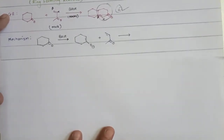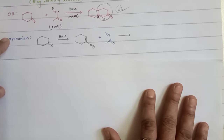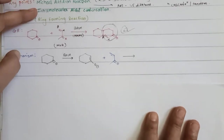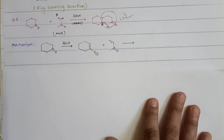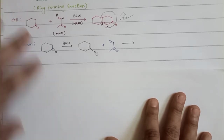Now let's walk through the complete mechanism. We will study the mechanism in three parts. The first part is formation of enolate. Second is conjugate addition, which is part of the Michael addition reaction. Third is protonation of your new enolate. Finally you will get your final product.